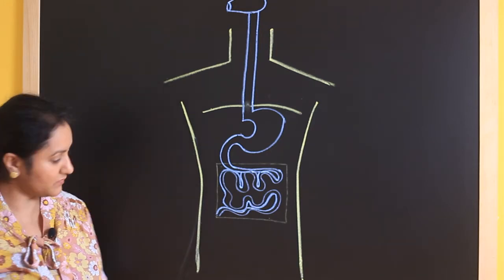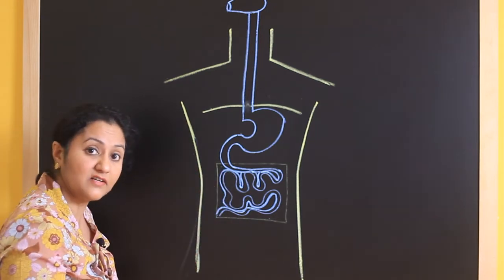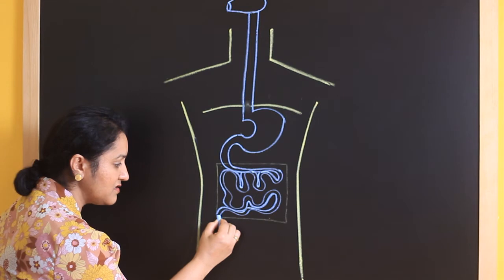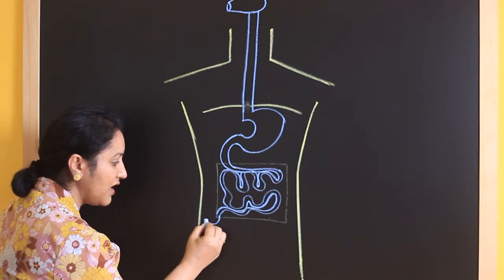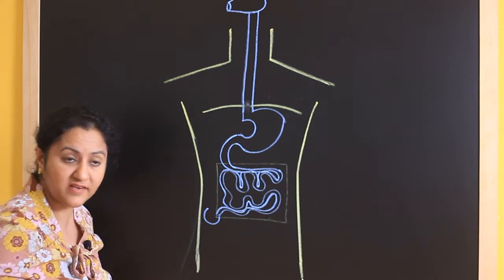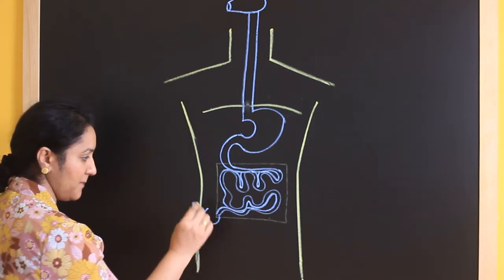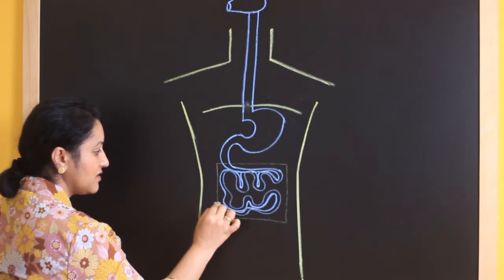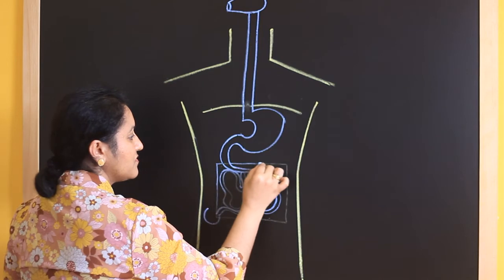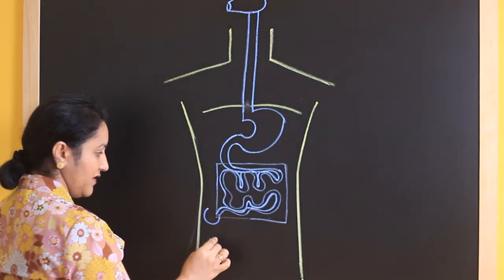Now what is next? After small intestine starts the large intestine. Now small intestine and large intestine meets at this common point where the large intestine forms the first part which is in the form of a pouch like structure. It is called a cecum. So you have to draw a pouch like structure here. Then just extend the square.